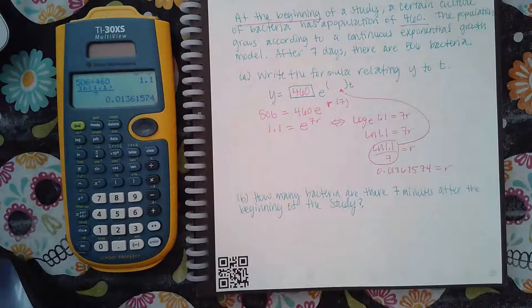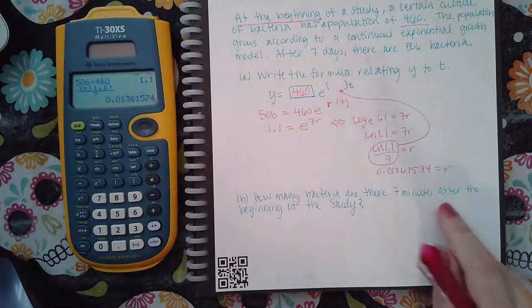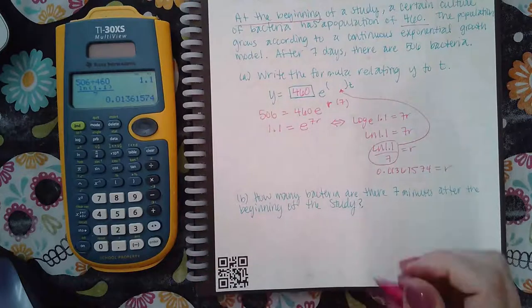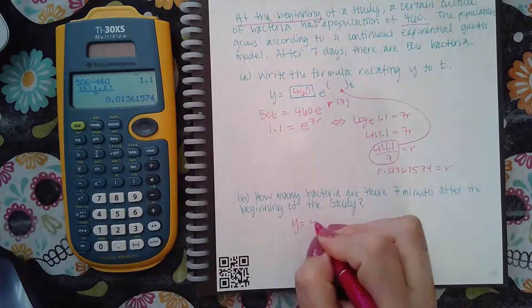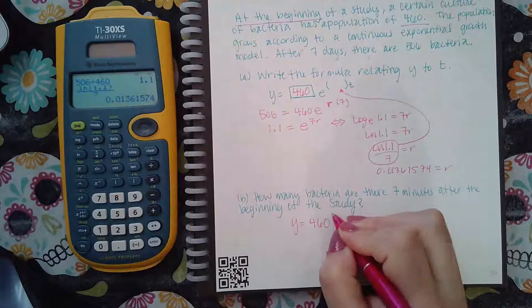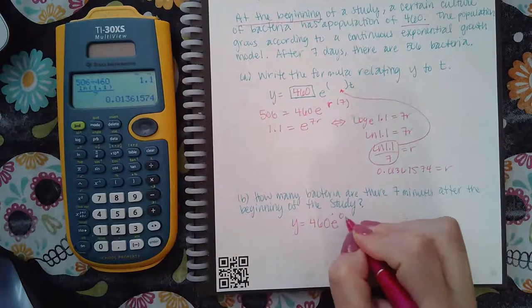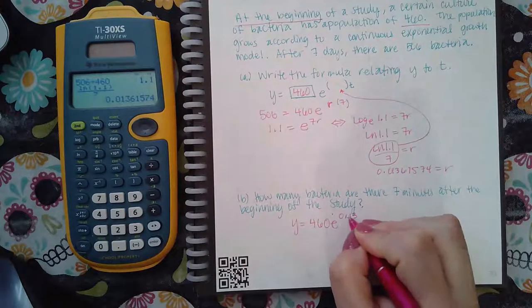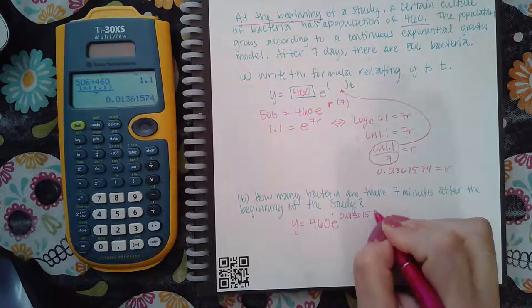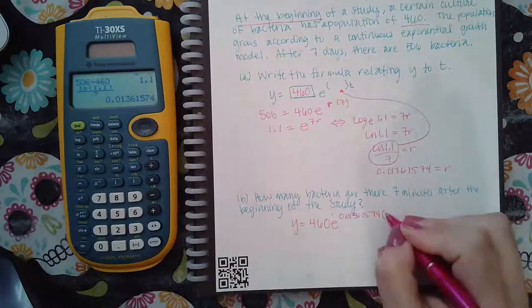Now it says, how many bacteria are there in seven minutes after the beginning of the study? So I'm going to use that formula from the previous problem. I'm going to use the decimal version: 0.13615744. And I'm saying after seven minutes.